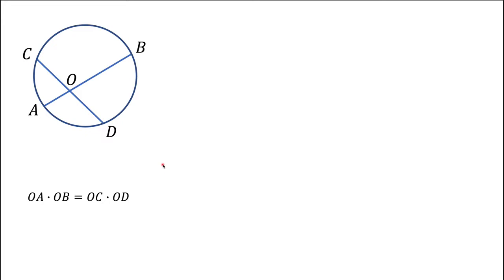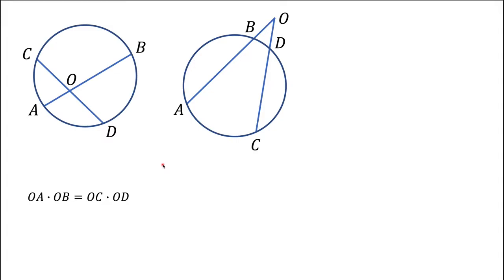Now let's take point O outside of the circle. Again we have lines ABO and ODC intersecting the circle at points A, B and C, D respectively, with O as the point of intersection of the two lines. The same expression OA·OB = OC·OD works for this case as well.